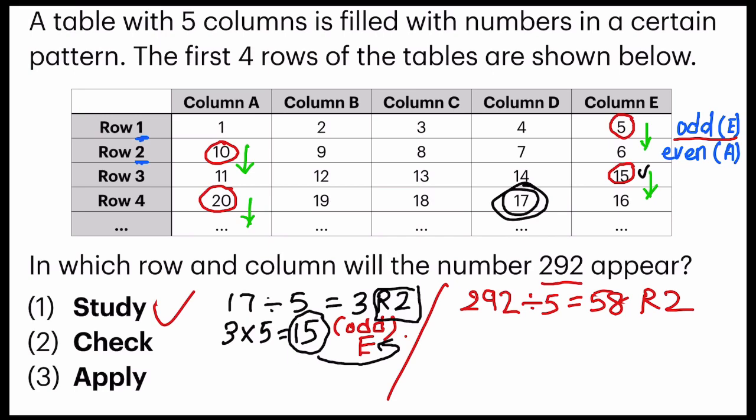Let me check the answer. 292 divided by 5. Yup. So now let's try to understand this number. This is the row number. But let's observe. This is an even number. Even number, which means it will fall on column A. And what's the number? So I'm going to take 58 times 5. I will get 290.